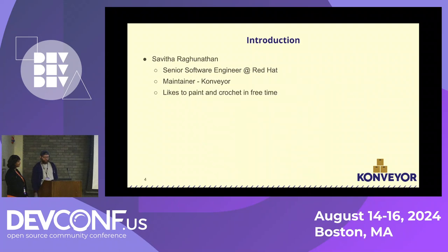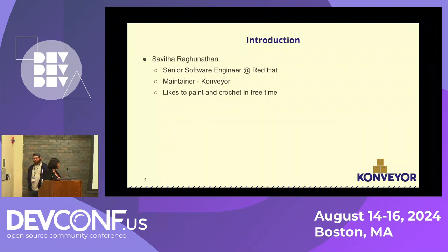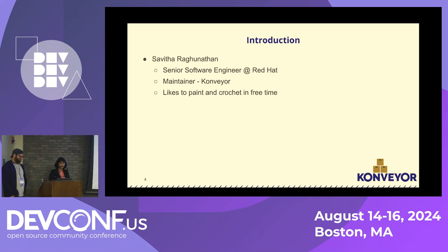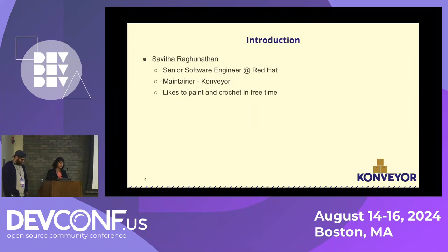I am a senior software engineer at Red Hat. I work with Sean and I am a longtime contributor to Kubernetes and also a maintainer for the Konveyor project, which we are going to see later in the talk today. I also like to paint and crochet and do all kinds of artsy stuff in my free time. One of the things I recently picked up is using coffee to paint — I love coffee to drink but I also like to use it as a medium to paint.